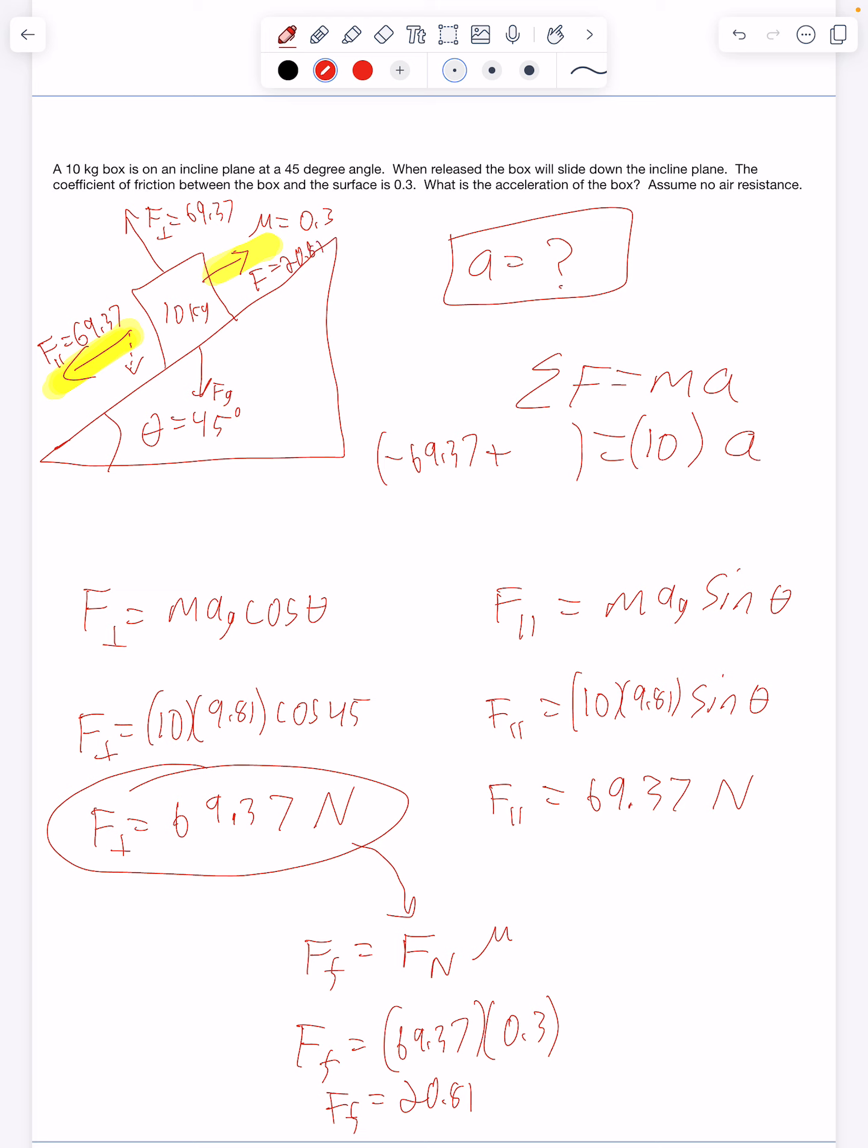So I'm going to add the two forces. So I have negative 69.37. That's going left over here. And I have positive 20 going in this direction. So I'm going to add those two forces. So I have 69.37, 20.81. We get negative 48.56 equals 10a. We can divide both sides by 10. And we get a equals negative 4.86 meters per second squared.